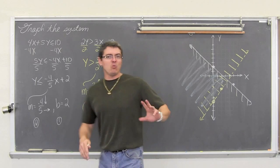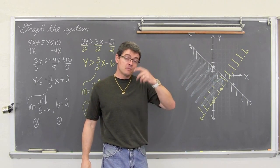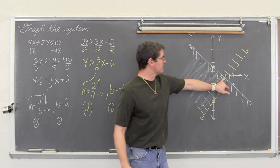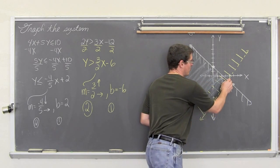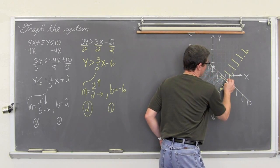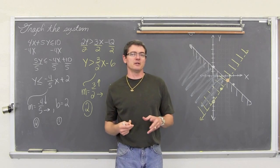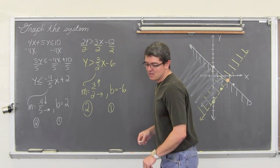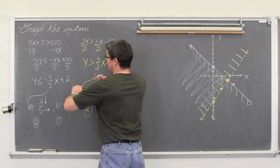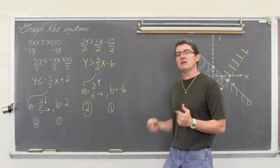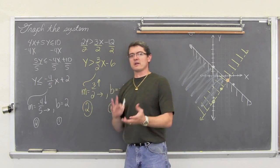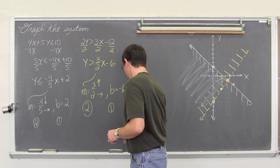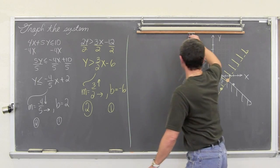We have our graphs and shading done. Now what about this intersection point? I want to make sure you understand completely what is going on. We should be able to determine whether this intersection point should be shaded or not just by looking at the work done so far. But let's actually find that point and test it. Our inequalities are both set equal to y, so substitution is the natural way to find the intersection point.